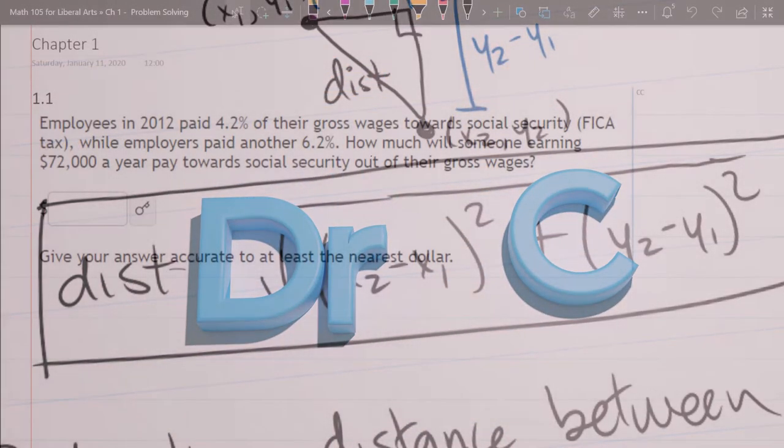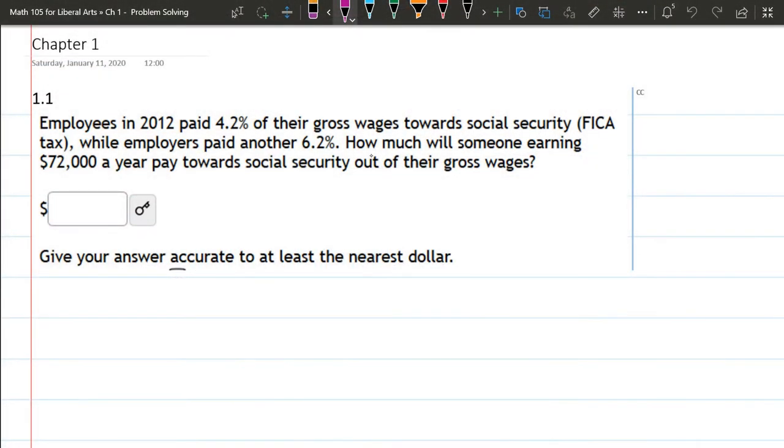We're going to compute how much towards Social Security comes out of the gross wages. Now this year doesn't matter, it's just a number that is in here. What we do have to do is pay attention to the percent that goes towards Social Security. The employer paid another 6.2%.